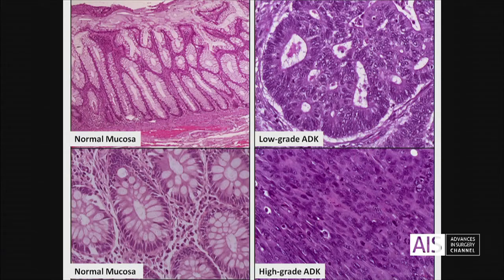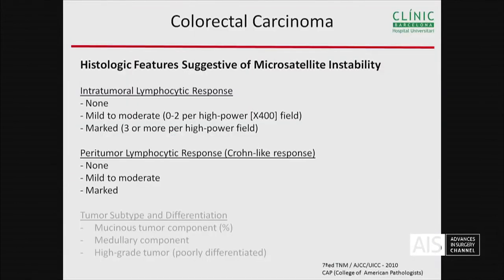We see in the right side normal mucosa, and on the left side a low grade adenocarcinoma, which looks like the normal mucosa. And in the bottom right side, we see a high grade adenocarcinoma. We should inform that if we see it.